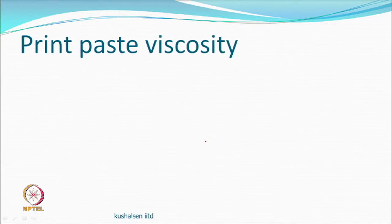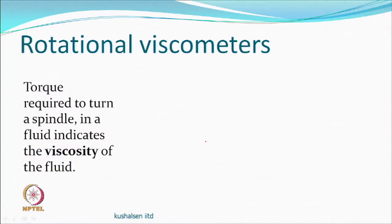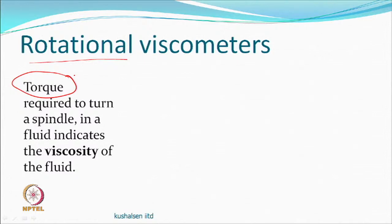When dealing with printing paste, we are more concerned about the viscosity of the paste rather than the intrinsic viscosity of the molecule. We cannot use a capillary viscometer for printing paste — nothing will pass through. We need different methods. One approach is rotational viscometers, where the torque and energy required to rotate a spindle in the viscous material are used to determine viscosity.